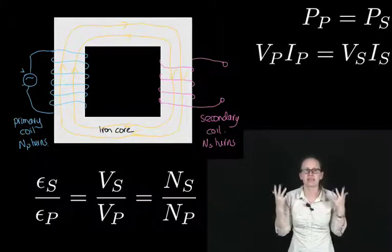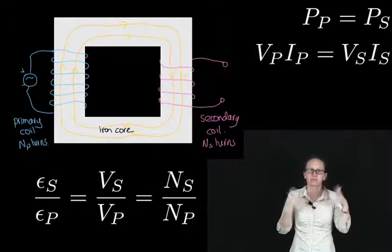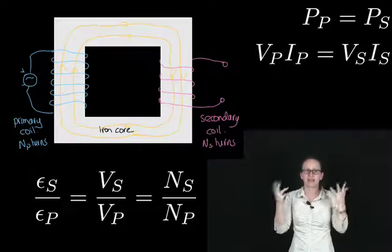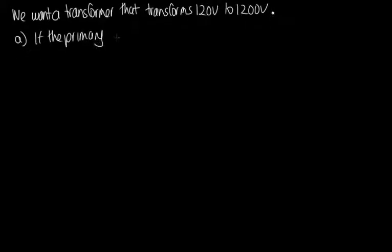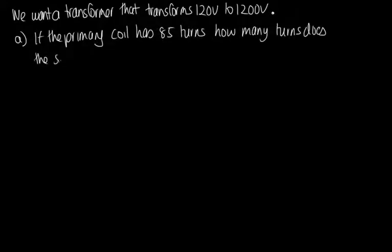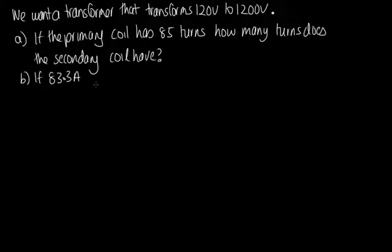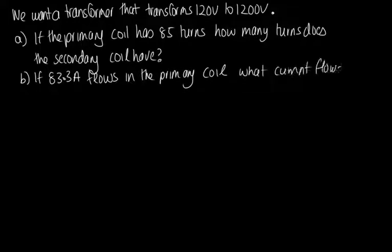Let's look at an example where we calculate voltage and current in a transformer. We want a transformer that transforms 120 volts into 1,200 volts. Part A: if the primary coil has 85 turns, how many turns does the secondary coil have? Part B: if 83.3 amps flows in the primary coil, what current flows in the secondary coil?